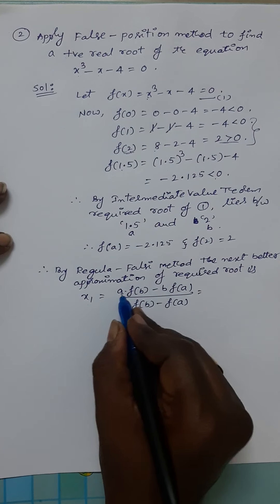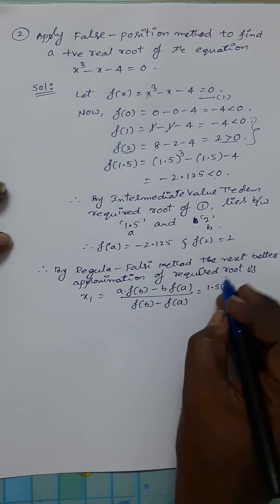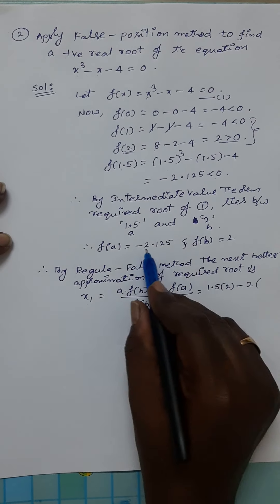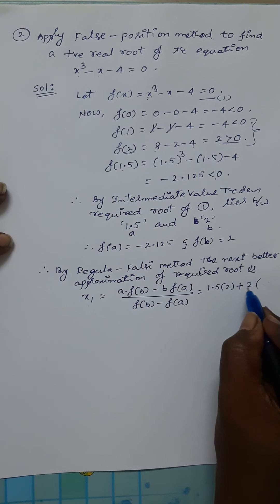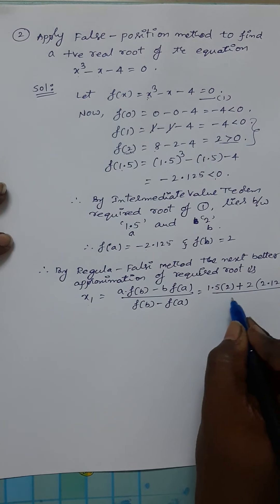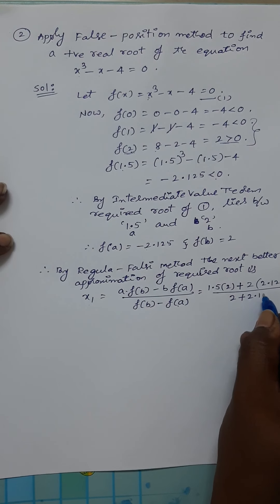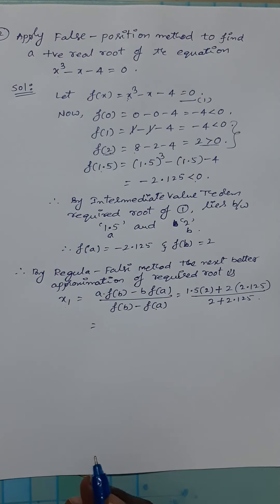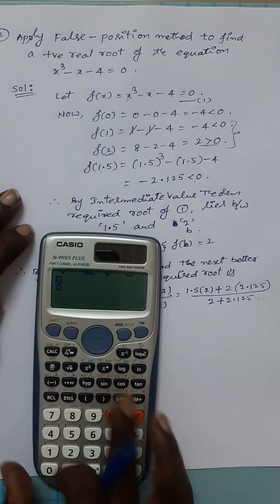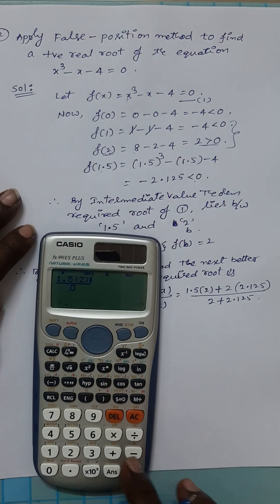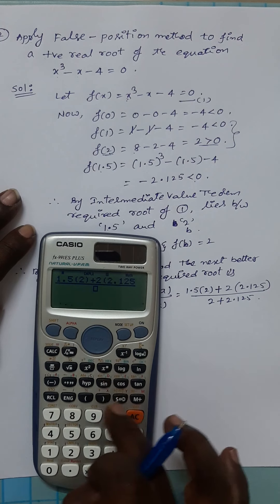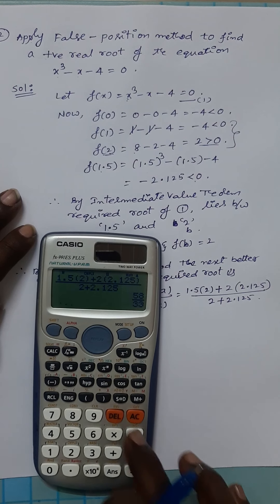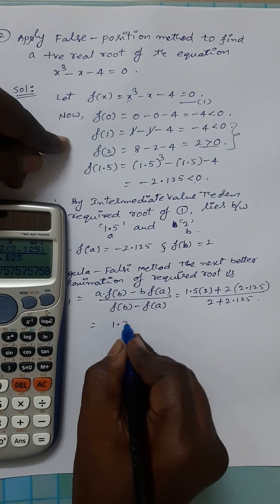Substituting the values: a = 1.5, b = 2, f(a) = -2.125, f(b) = 2. So the numerator is 1.5 × 2 + 2 × 2.125 (the minus of minus becomes plus), and the denominator is 2 + 2.125. Using a scientific calculator: (1.5 × 2 + 2 × 2.125) / (2 + 2.125) = 1.7575.